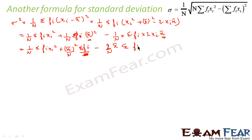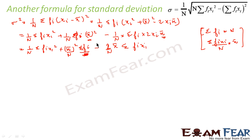Now we know that sigma fi is nothing but n, and sigma fi·xi by n is nothing but the mean. Using these two substitutions, sigma fi gets marked as n and sigma fi·xi by n gets marked as mean. So what we get is 1 by n into sigma fi·xi squared plus mean squared.